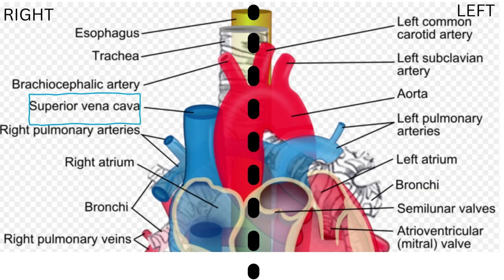I will now talk about the anatomical relationships of the superior vena cava. During my studies, I divide these into four or six areas depending on clinical importance: right, left, anterior, posterior, superior, and inferior. Now we will look at four important sides — right, left, anterior, and posterior — starting with the left side, followed by the right side, anterior, and posterior.